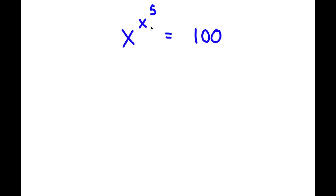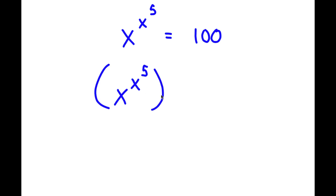So in this problem I have x to the power of x to the power of 5, is equal to 100. To solve this, I'm going to first start by taking the power of 5 on both sides. So now I have x to the power of x to the power of 5, to the power of 5, is equal to 100 to the power of 5.